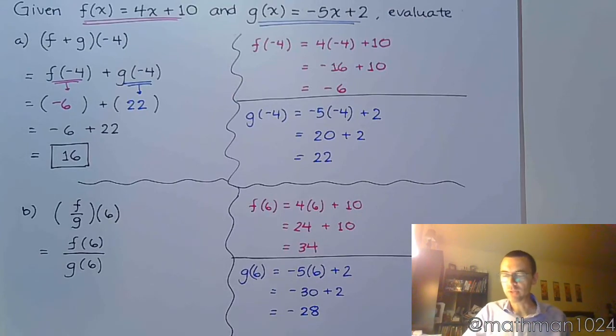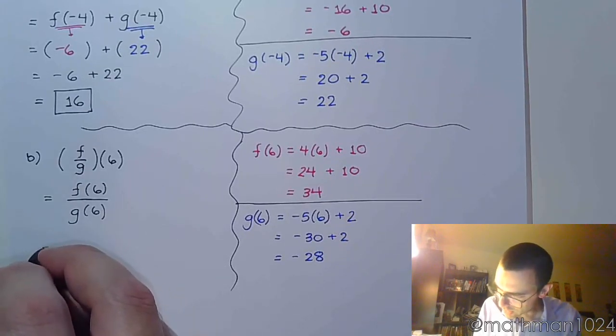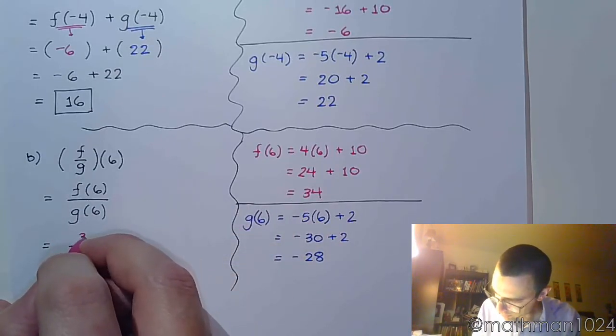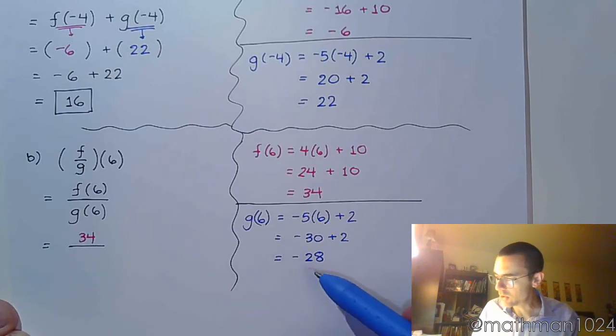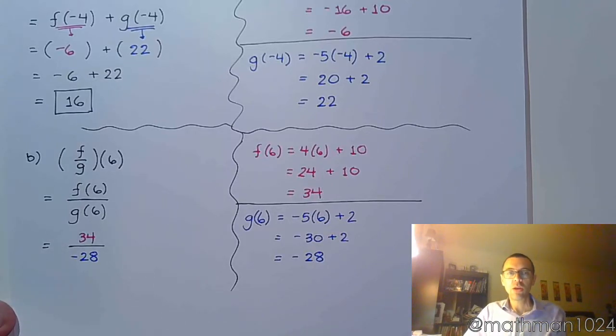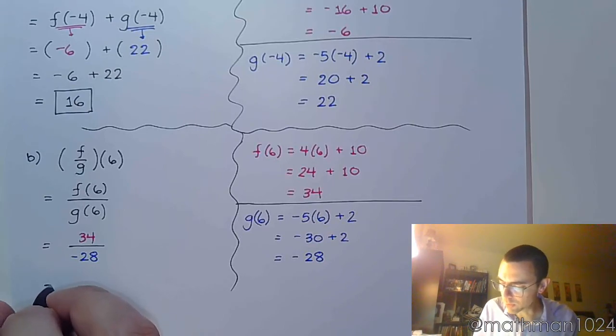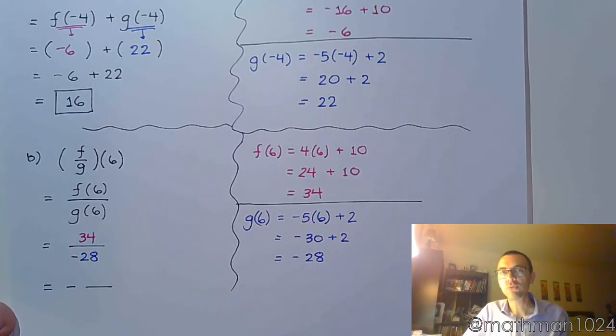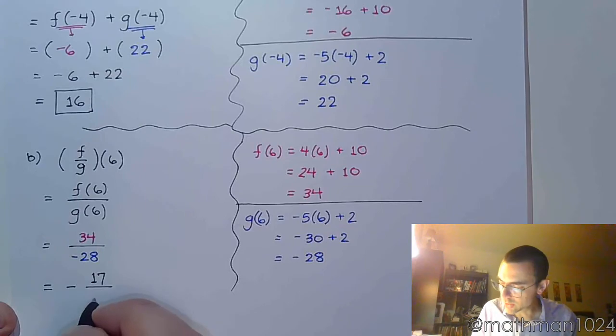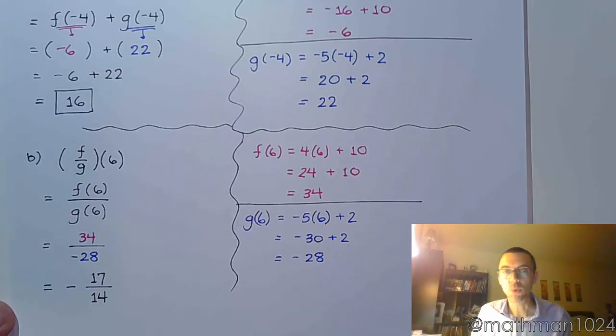So, we have the two separate evaluations, and let's bring them back in to what we have here. So in my numerator, f(6) is 34. And g(6) is -28. We just need to divide, really just simplify the fraction because I do not want a decimal. We can reduce 34 and 28 by a common factor of 2. So, 34 divided by 2 is 17, and 28 divided by 2 is 14. And so, there you go. That's it.